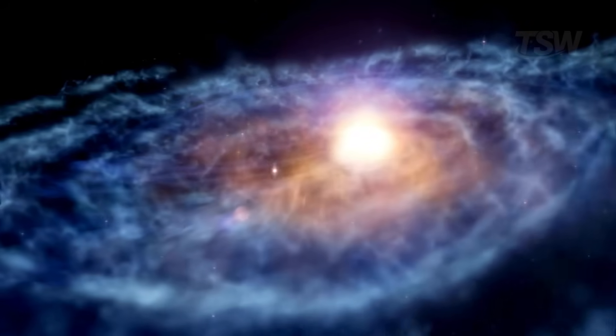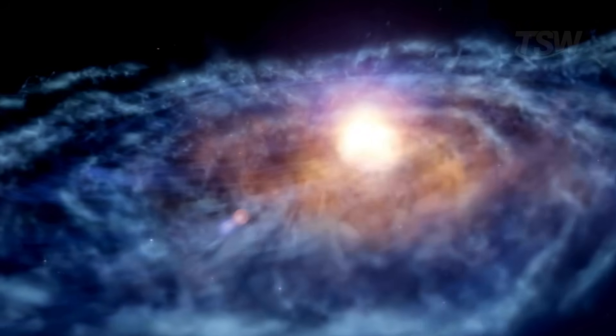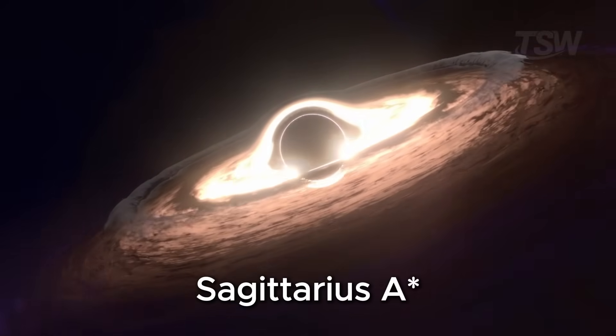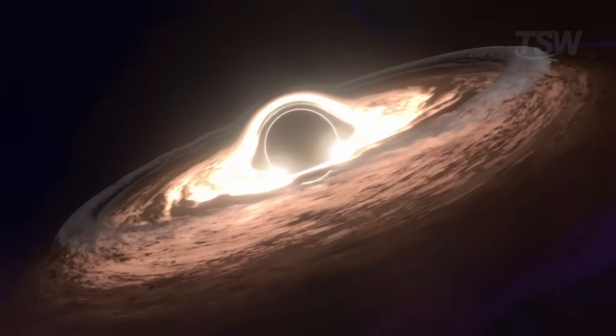In the Milky Way's case, that black hole is known as Sagittarius A*, and it has roughly four million times the mass of the Sun—a kind of gravitational anchor for everything around it.